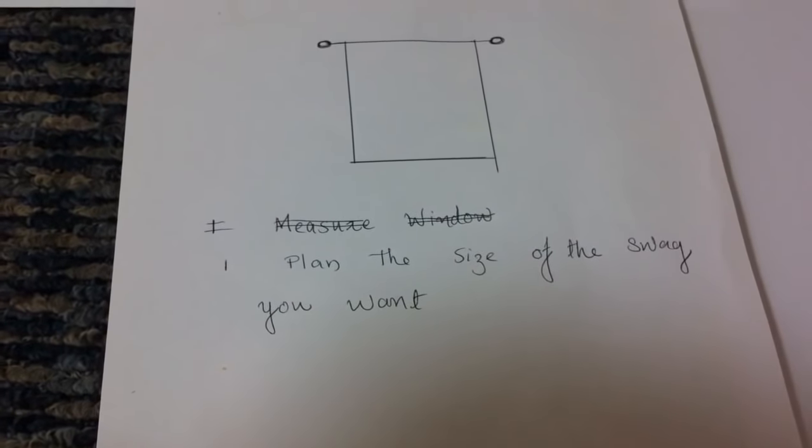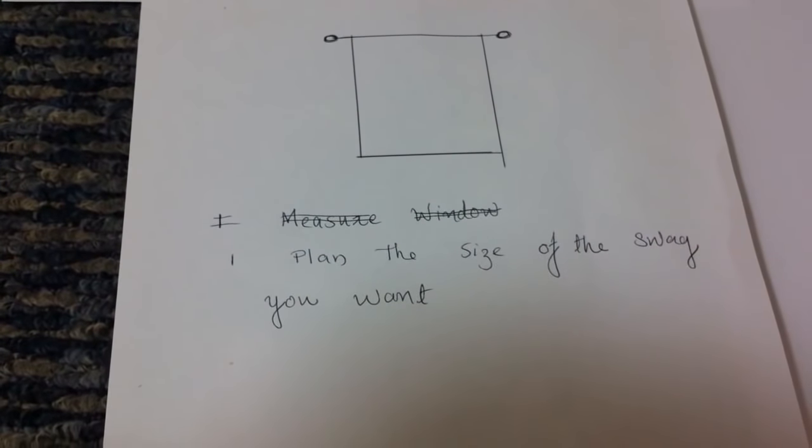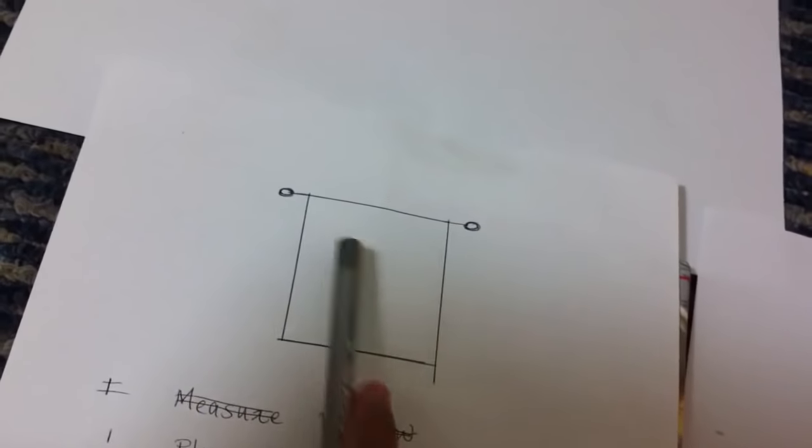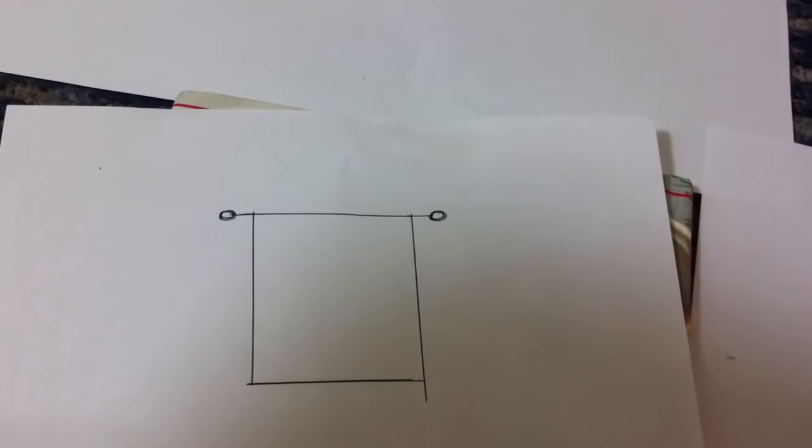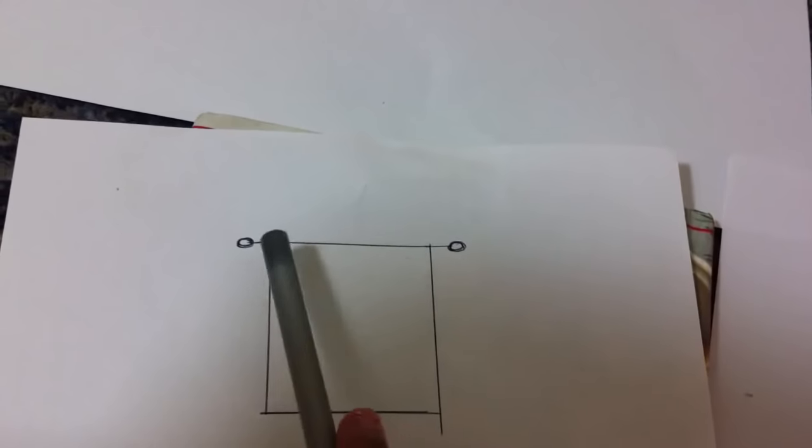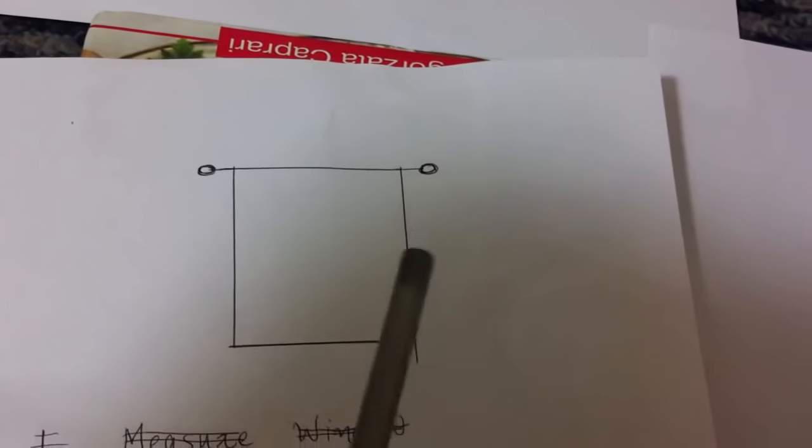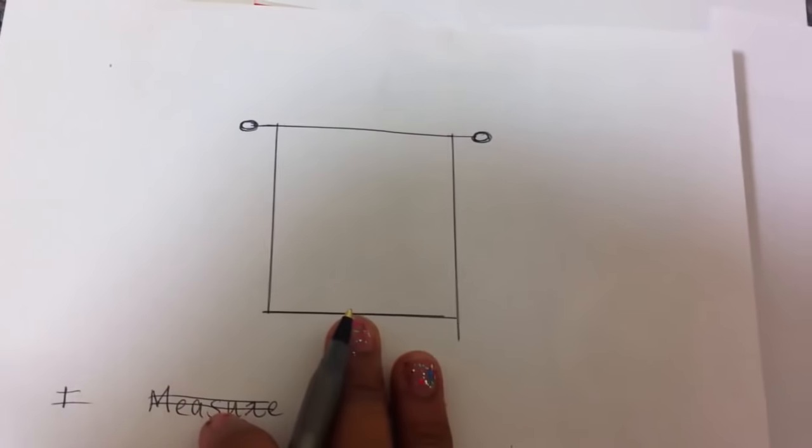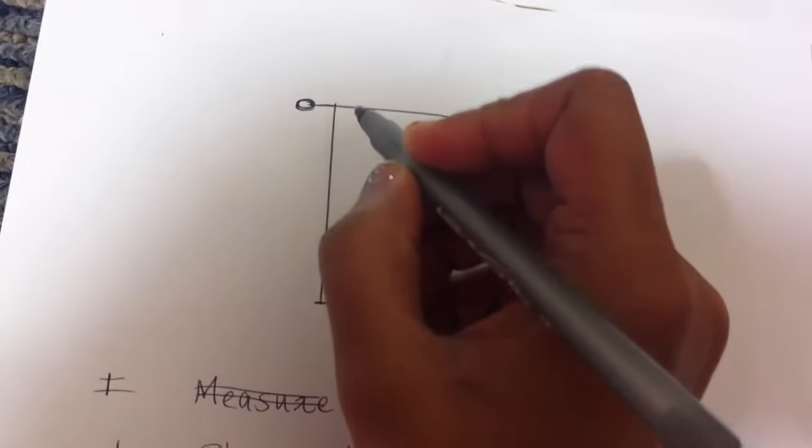The first thing we need is to plan and decide the size of the swag you want. Suppose this is your window and this is a curtain pole, so decide what size of swag you want - maybe you want multiple swags or a single one. Personally, I prefer to have multiple swags on my window, but this time we are going to learn from the basics, so just plan what size you want.